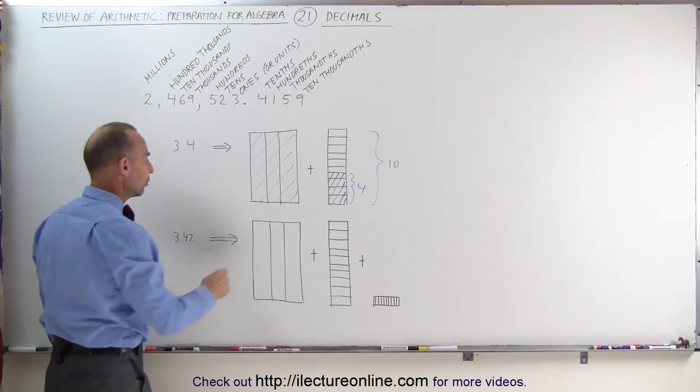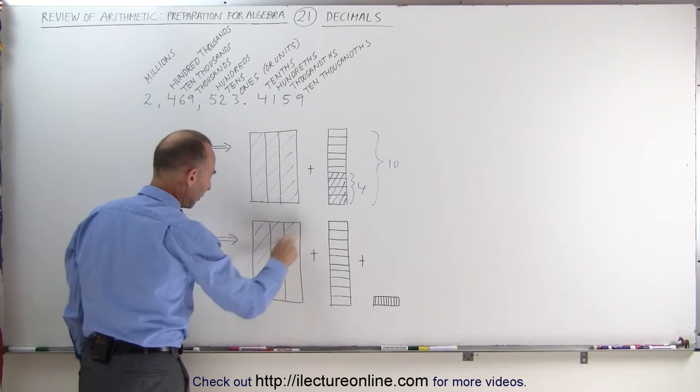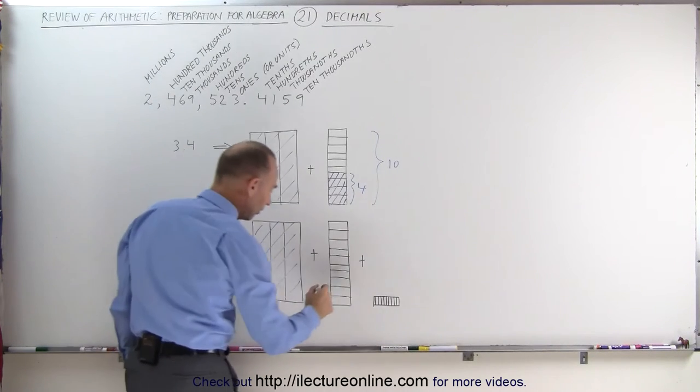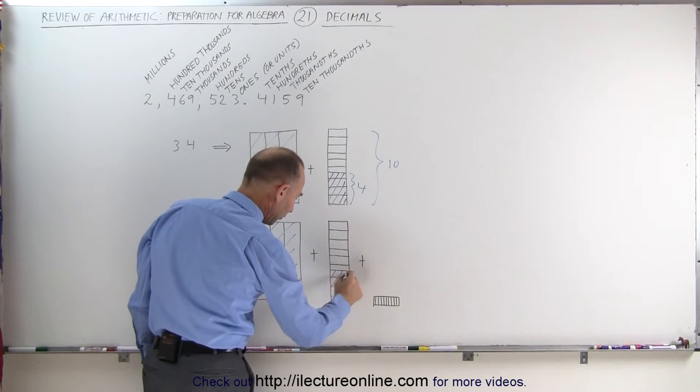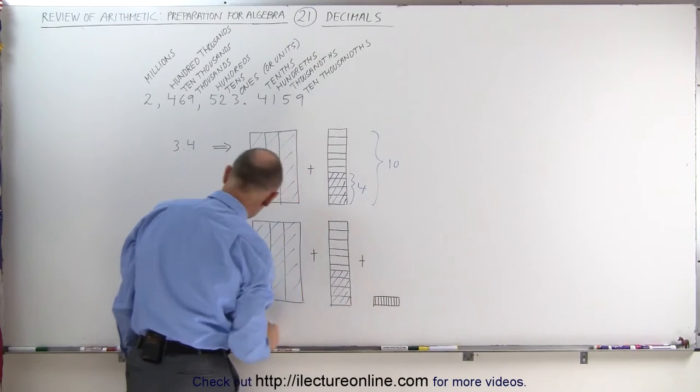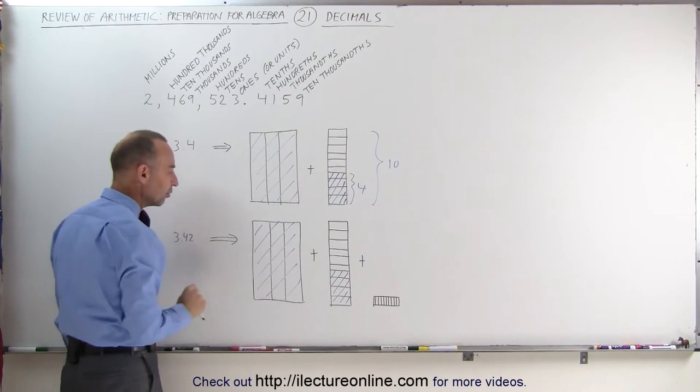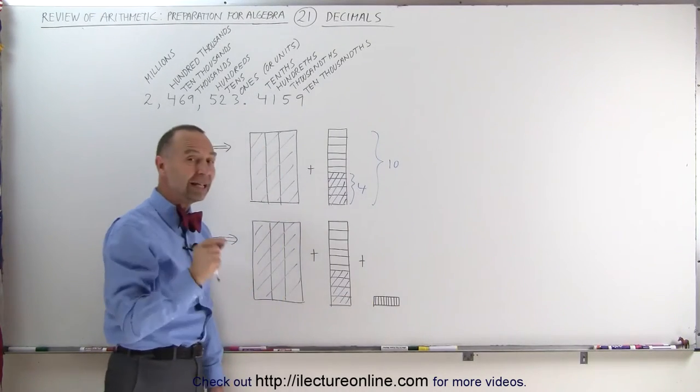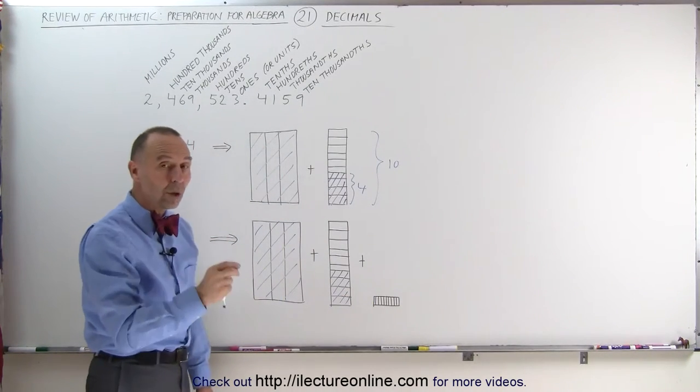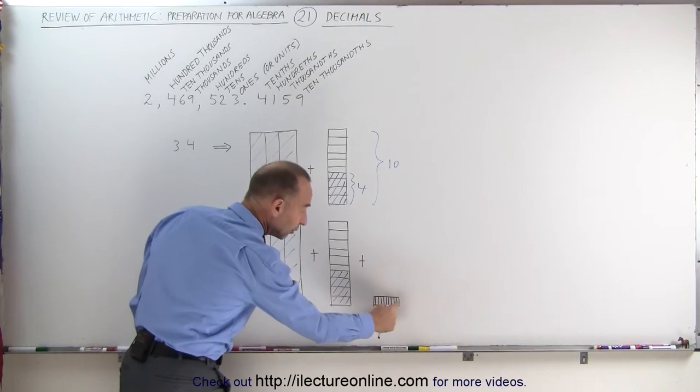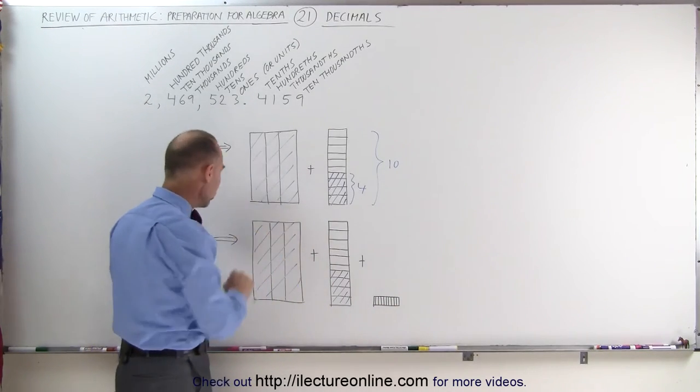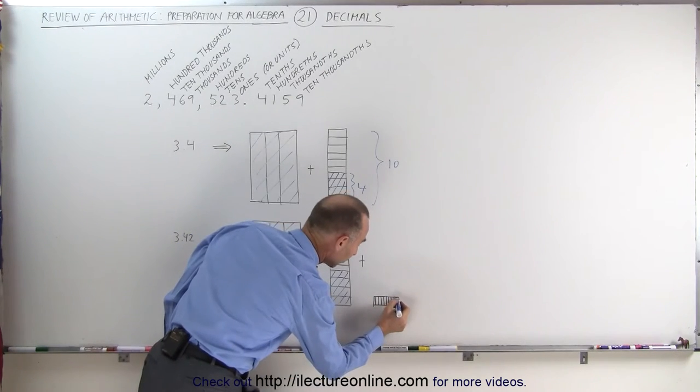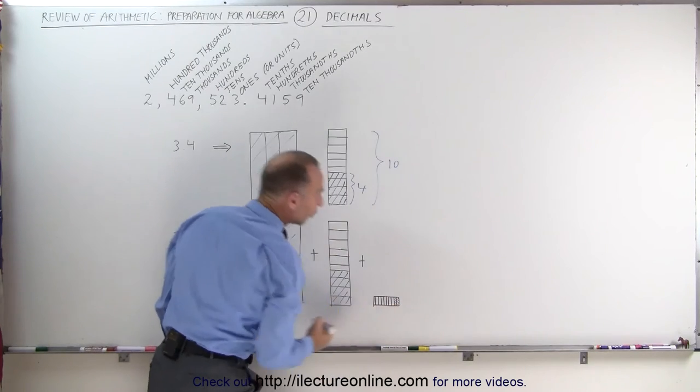Here we have 3.42. We still have 3 whole units. That's represented by the number 3. We have 4 tenths. So we grab 4 of these, 4 out of 10. And then we have 2 one hundredths. Notice you take one tenth and you divide it into 10 equal pieces. Each of these little pieces represents one one hundredth of a whole unit. You would need a hundred of these little pieces to make up a whole unit. That's what the second decimal place represents. Since we have 2 of them, we will just go ahead and color in 2 of those pieces.